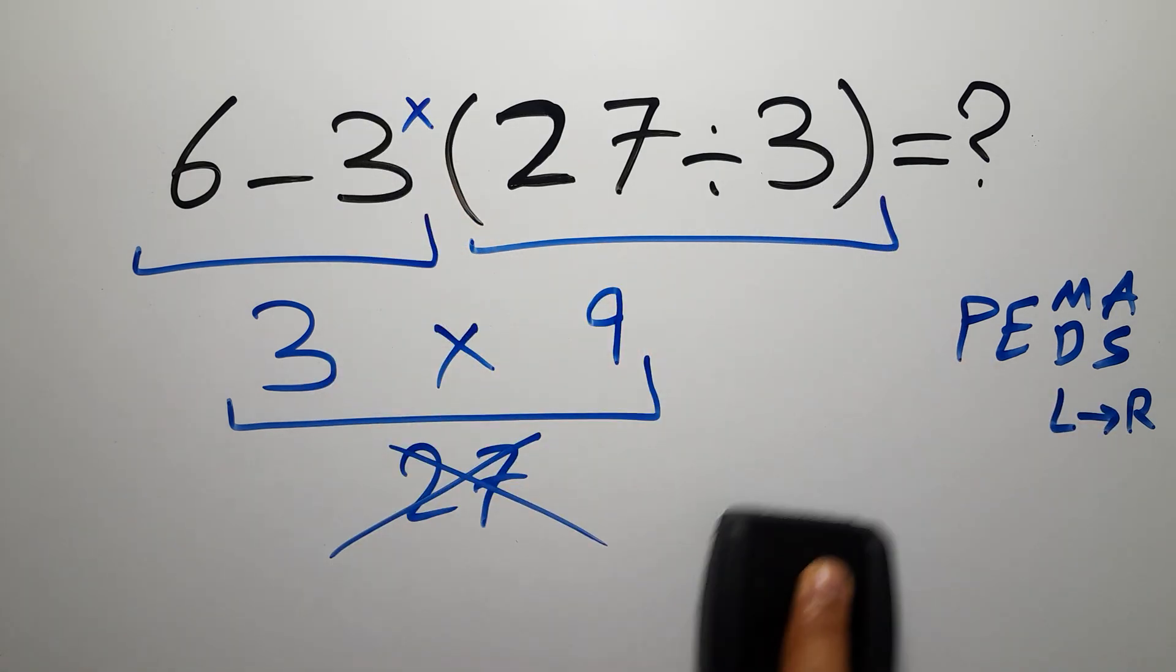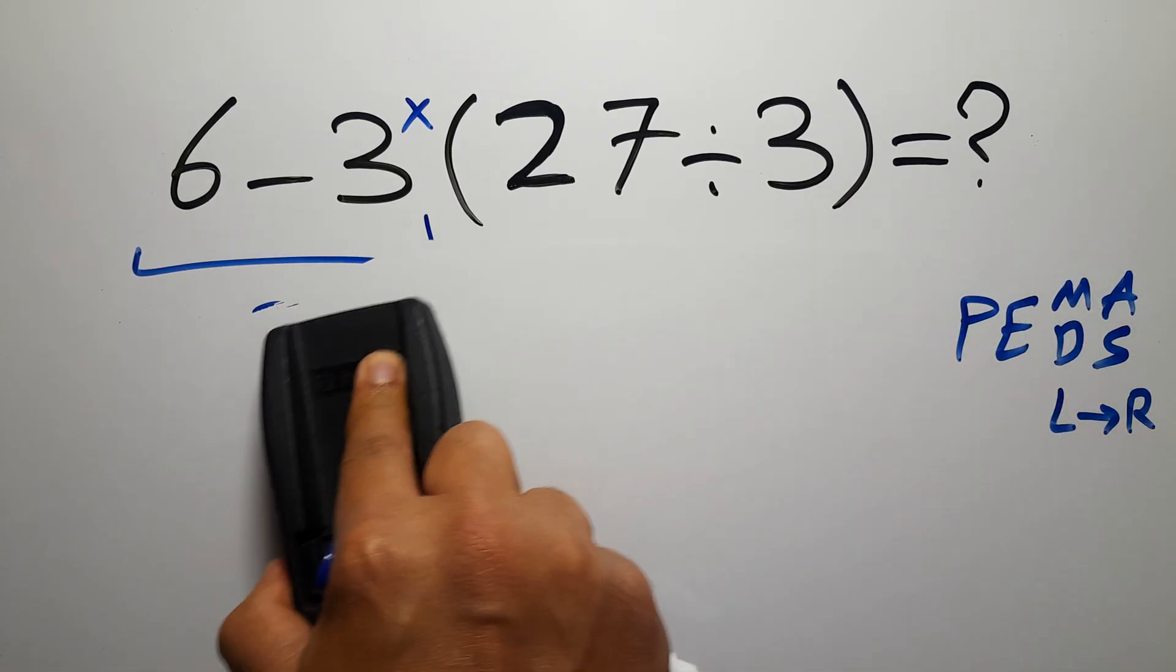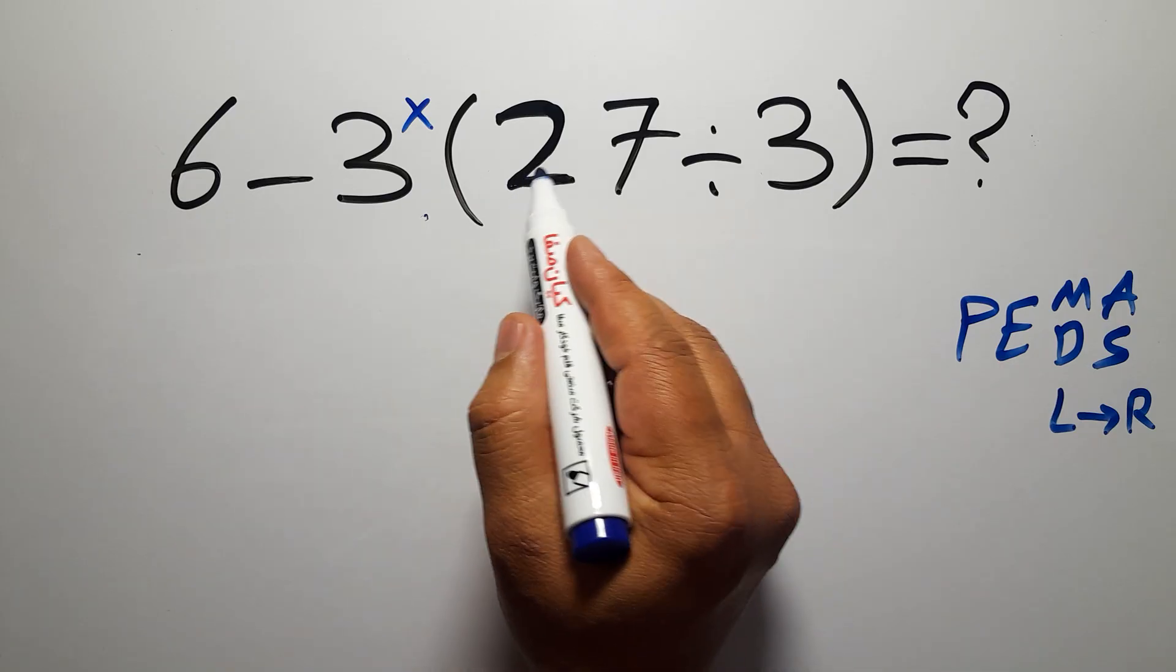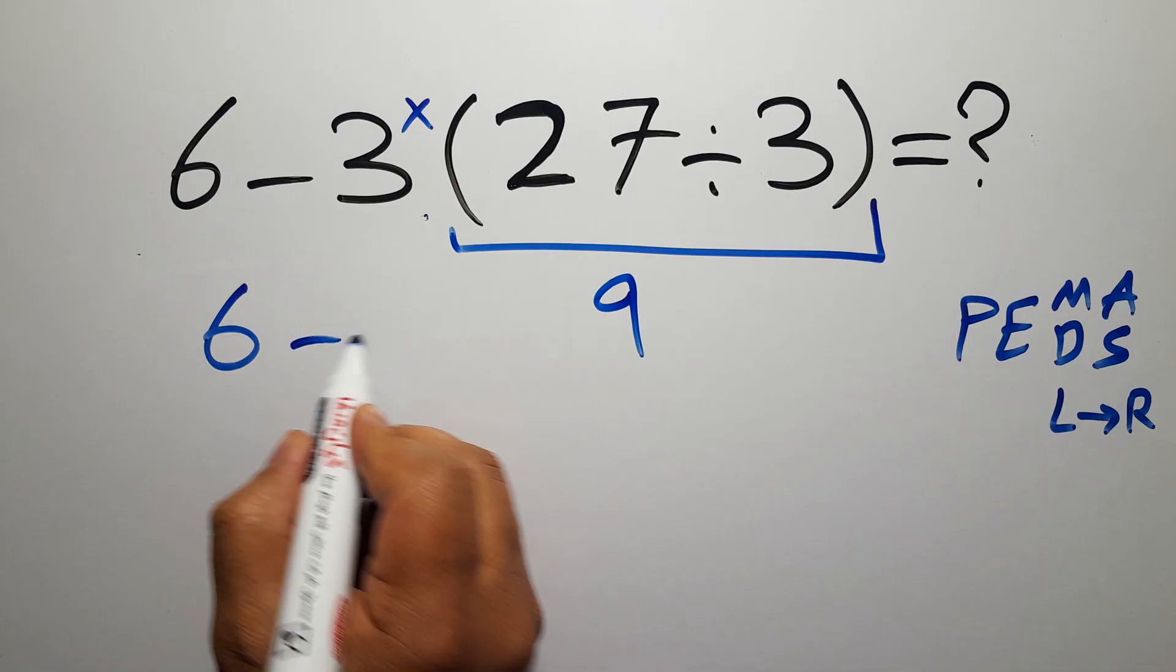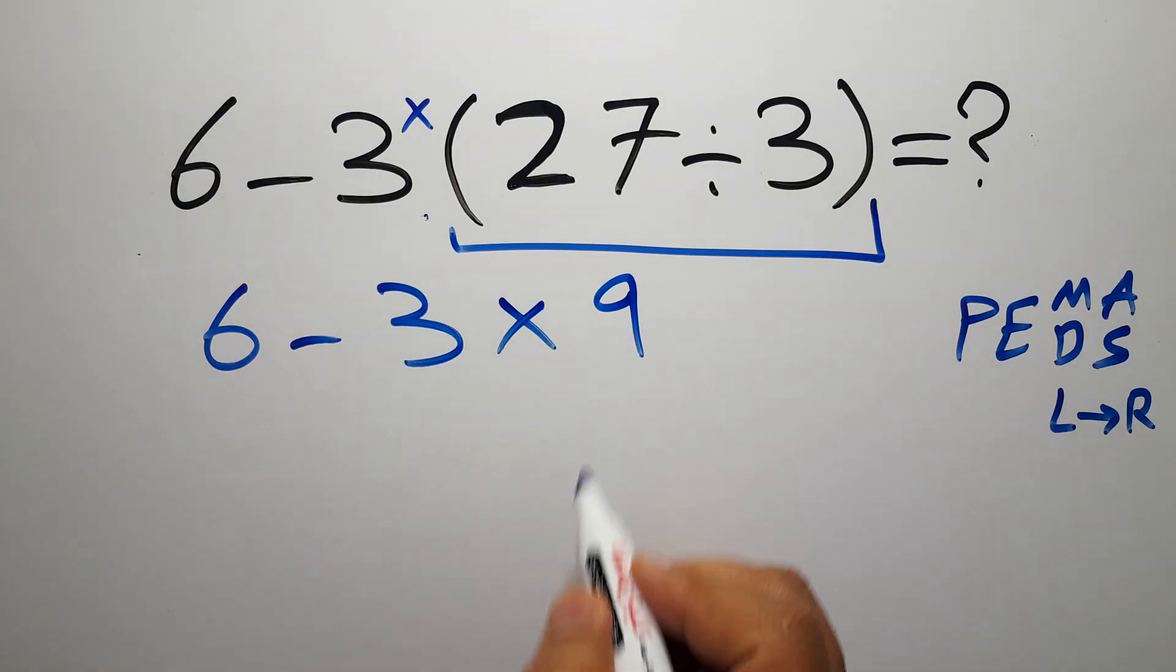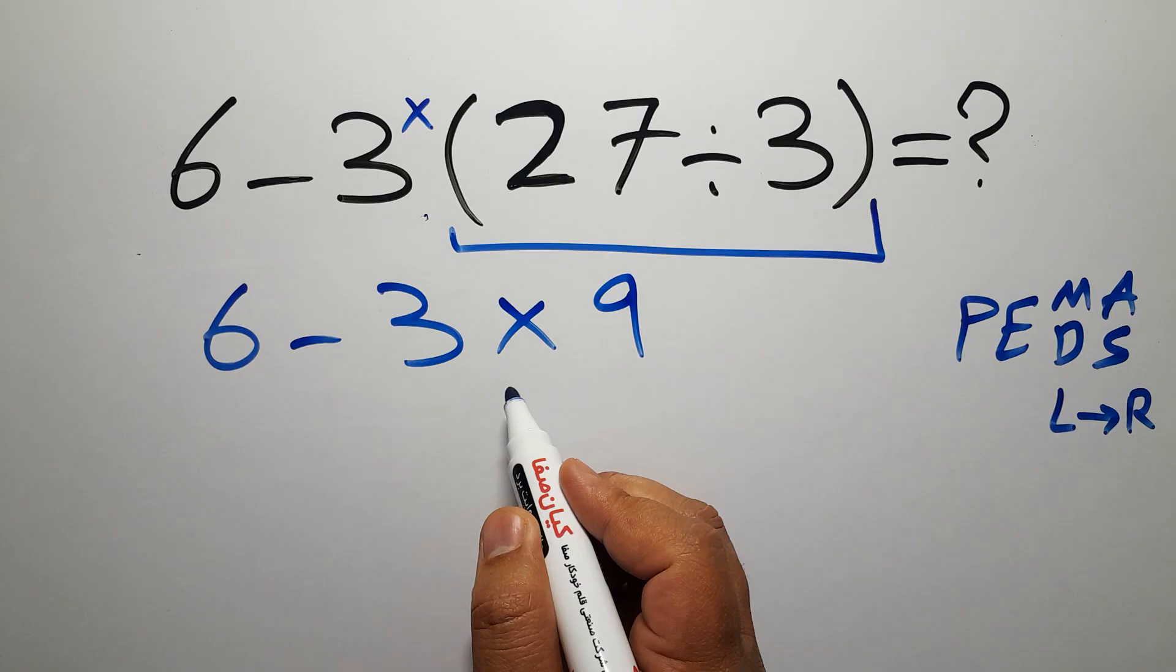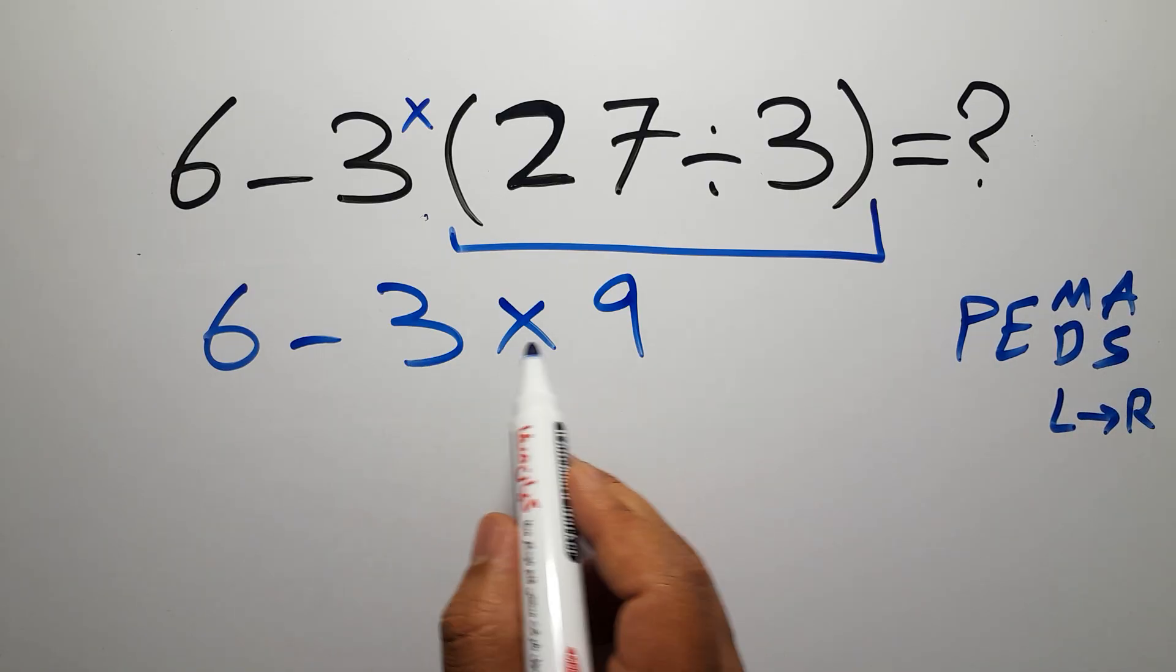It is wrong. So first, our parentheses: 27 divided by 3 gives us 9, so we have 6 minus 3 times 9. Now we have to do this multiplication because in PEMDAS multiplication comes before subtraction. 3 times 9 gives us 27.